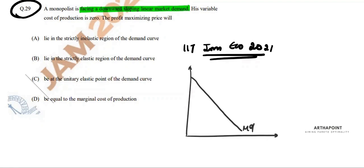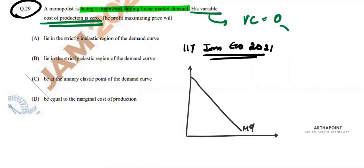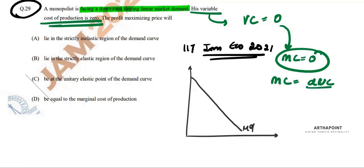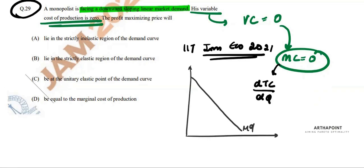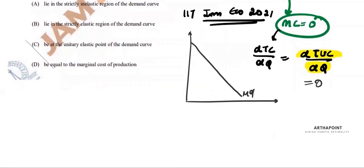The variable cost of production is zero, which means that marginal cost can also be zero. We know that MC is how total cost changes when output changes — that is, change in total variable cost when output changes. But since variable cost is zero, there is no change in variable cost when output changes, so marginal cost is zero.